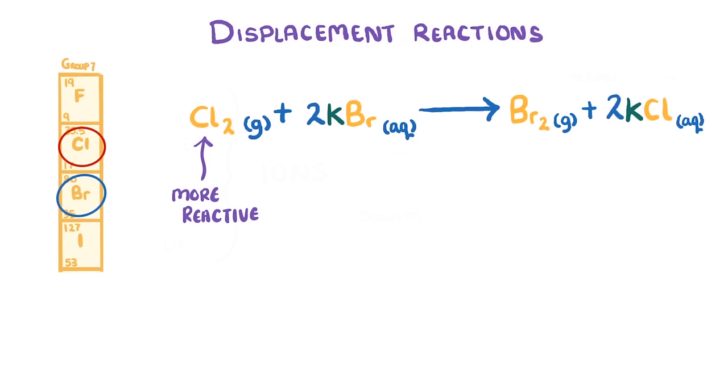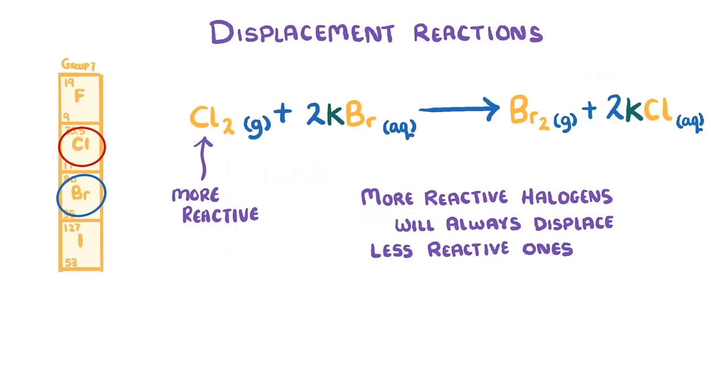The main thing to remember here is just that more reactive halogens will always displace less reactive ones. For example, fluorine, chlorine, and bromine could all displace iodine, as iodine is the least reactive.